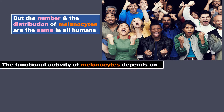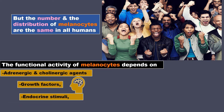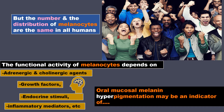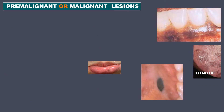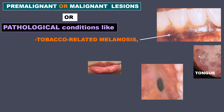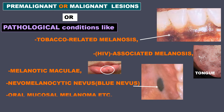The functional activity of melanocytes depends on adrenergic and cholinergic agents, growth factors, endocrine stimuli, inflammatory mediators, etc. Due to this, oral mucosal melanin hyperpigmentation may be an indicator of premalignant or malignant lesions or pathological conditions like tobacco-related melanosis, HIV-associated melanosis, melanotic maculae, nevomelanocytic nevus, i.e. blue nevus, oral mucosal melanoma, etc.